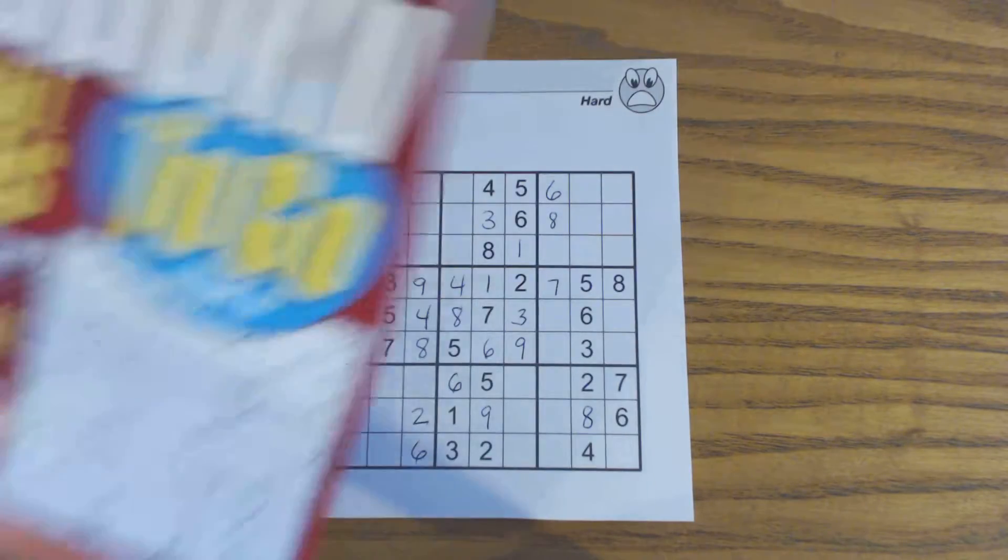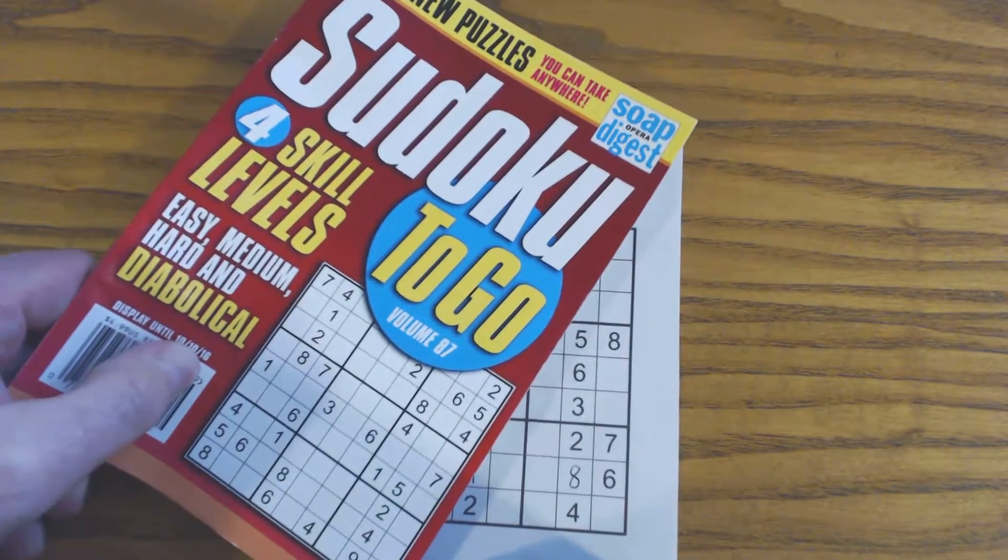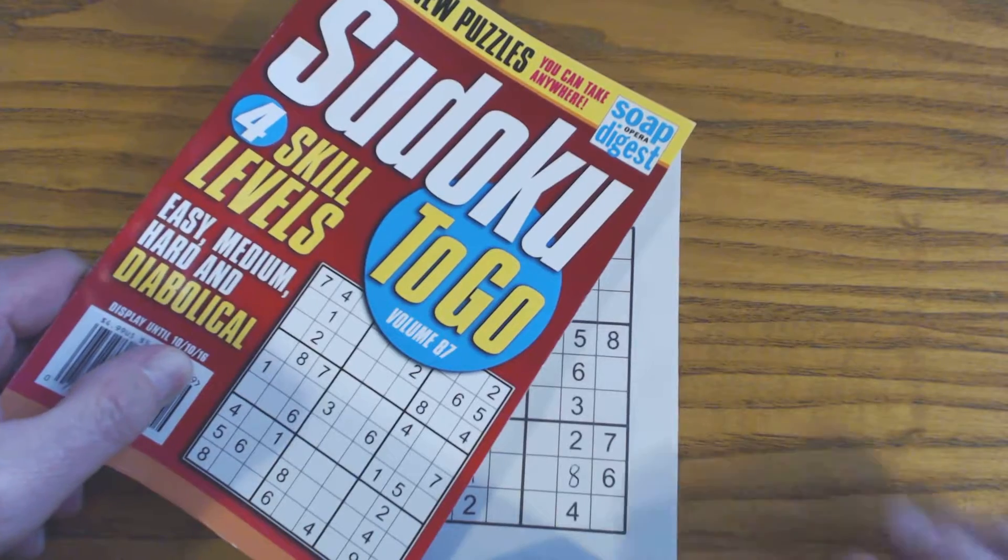This is puzzle number 66 in Sudoku To Go, Volume 87 by Soap Opera Digest.